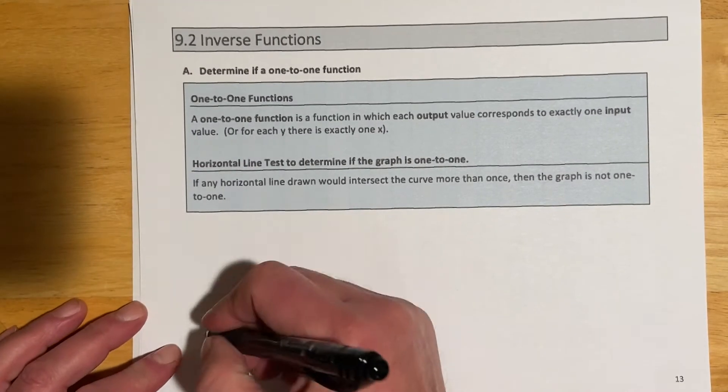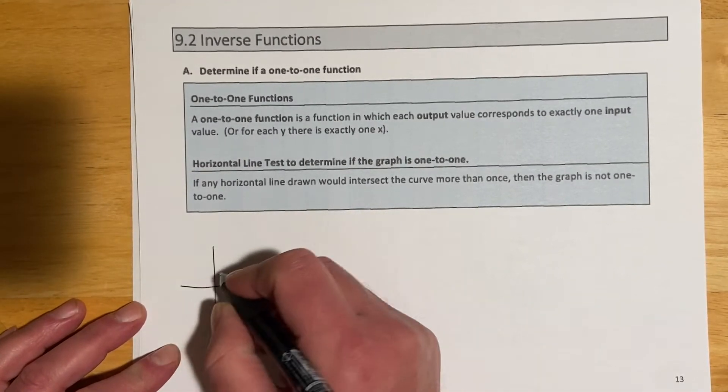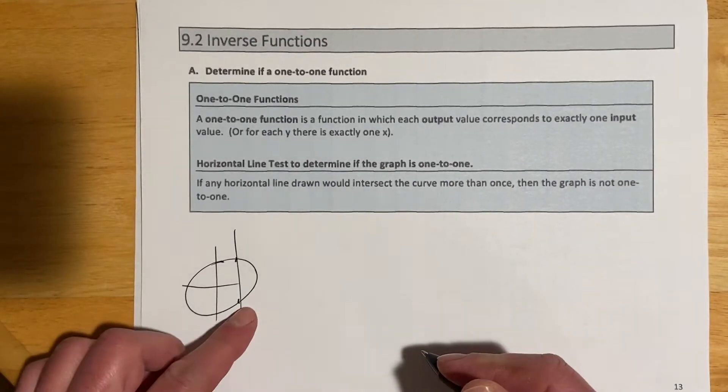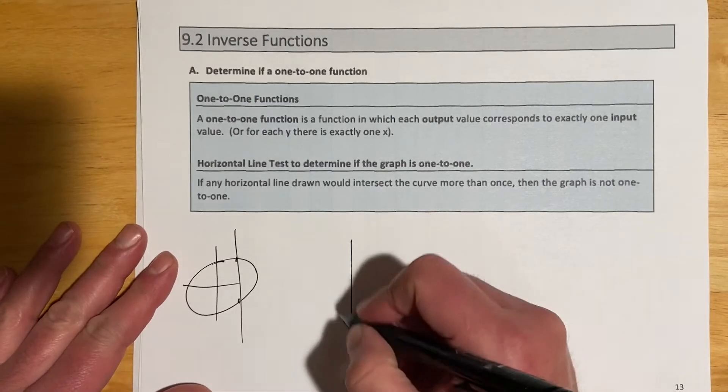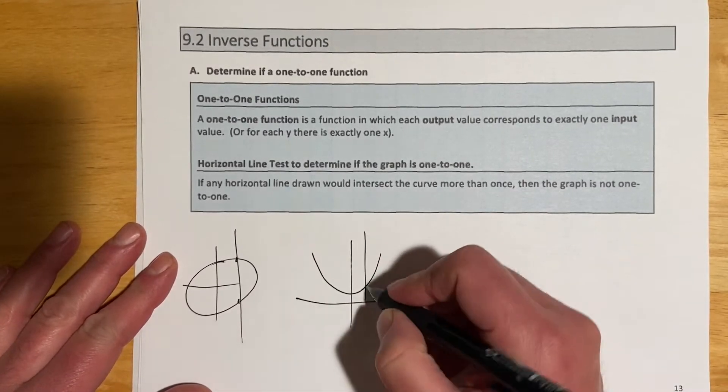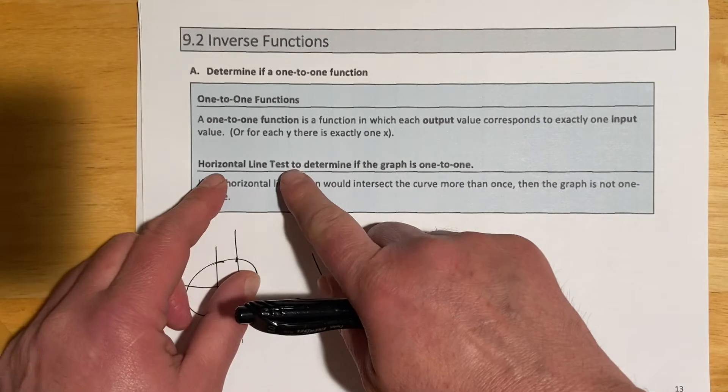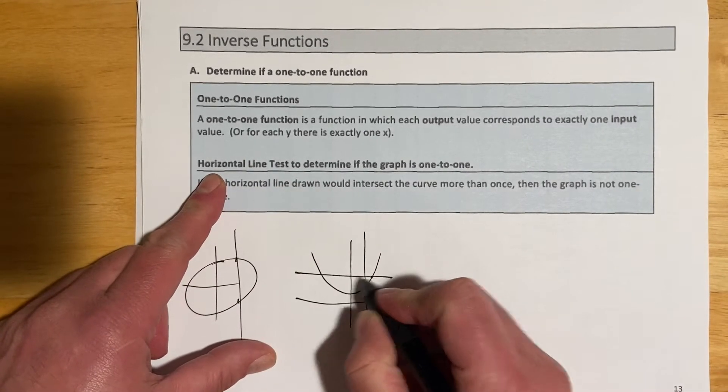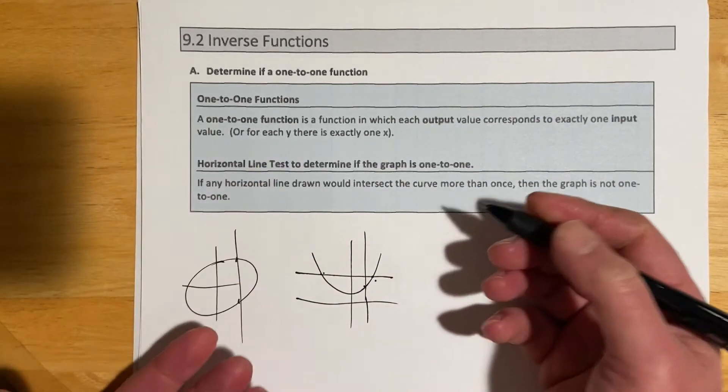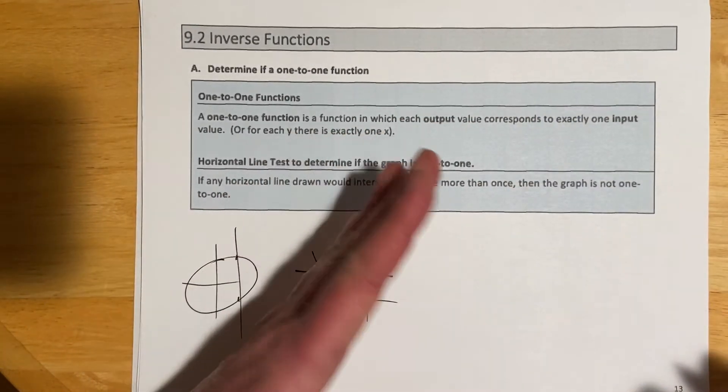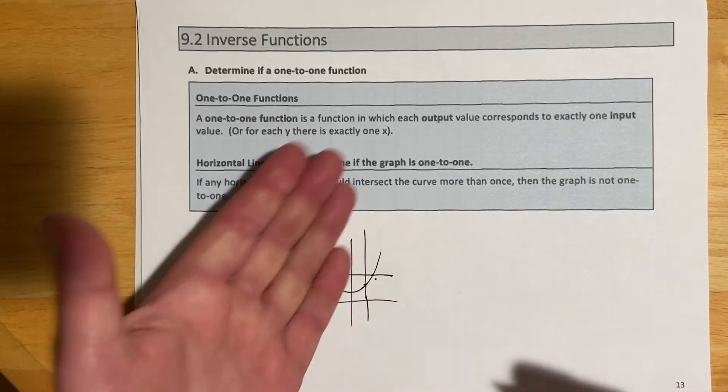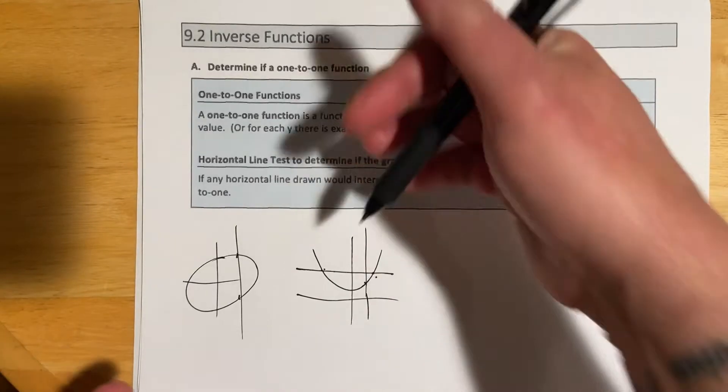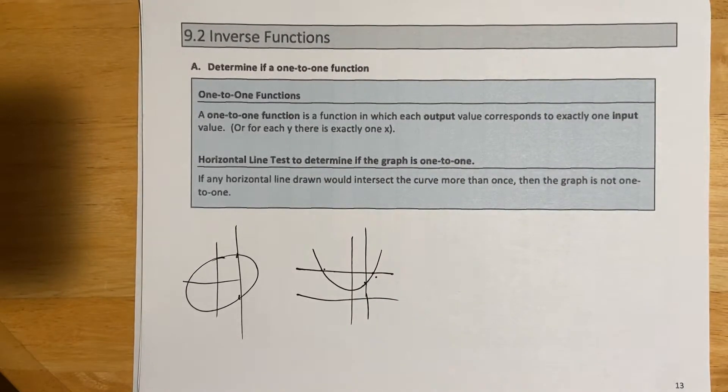You might remember with functions, they had that vertical line test. A circle doesn't pass the vertical line test, so that would not be a function, but a parabola does pass the vertical line test. For a function to be one-to-one, it also has to pass a horizontal line test. If it hits it twice going this way, when we go to find its inverse, which is essentially going to reflect it about the origin, its inverse won't be a function. That's why we need for our functions to be one-to-one for the inverse to exist.